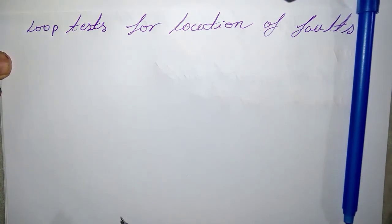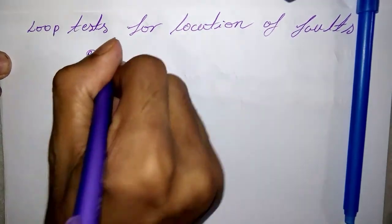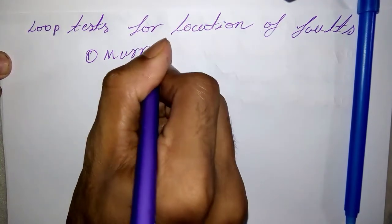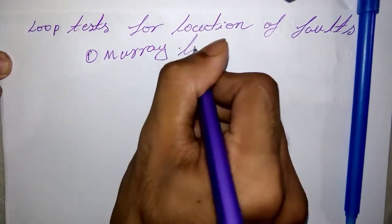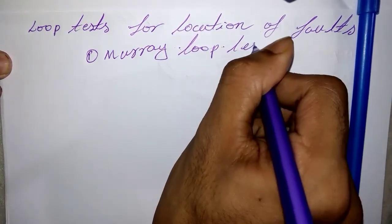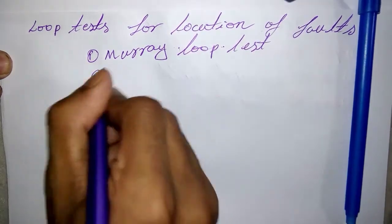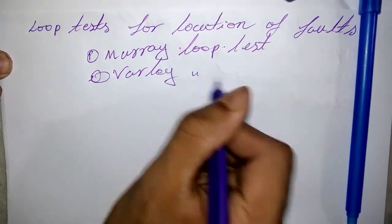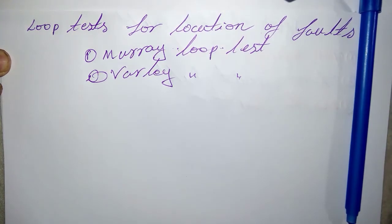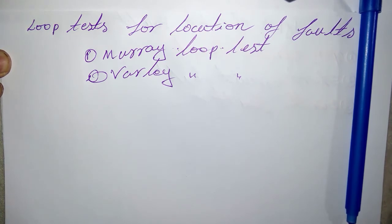However, two popular methods are known: the first one is Murray Loop Test and the second one is Varley Loop Test. This simple test can be used to locate the earth fault or short circuit fault in underground cables, provided that a sound cable runs along the fault location. Both these tests employ the principle of the Wheatstone bridge for fault location.